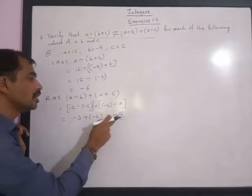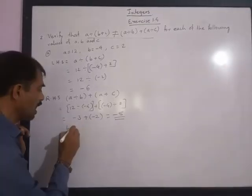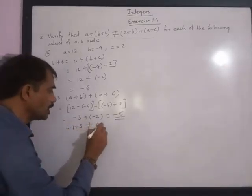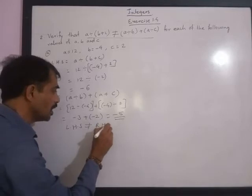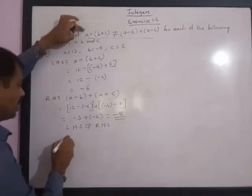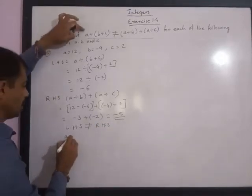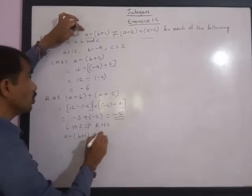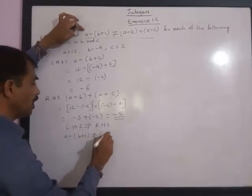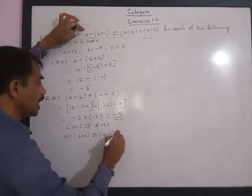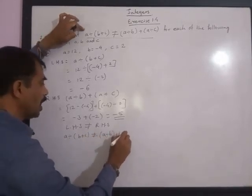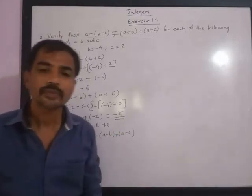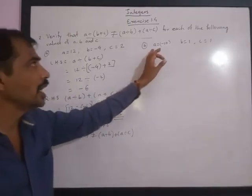LHS is negative 6 and RHS is negative 5. It means left hand side is not equal to right hand side. This also means a divided by bracket b plus c is not equal to a divided by b plus a divided by c.